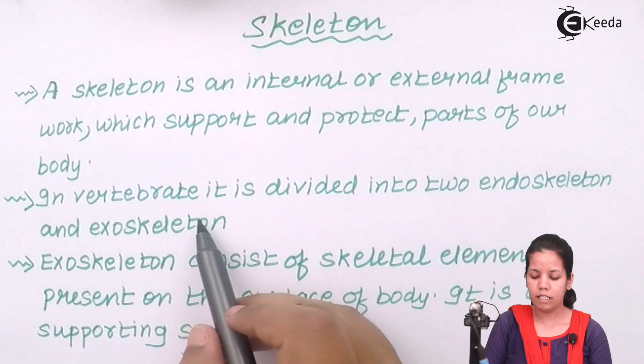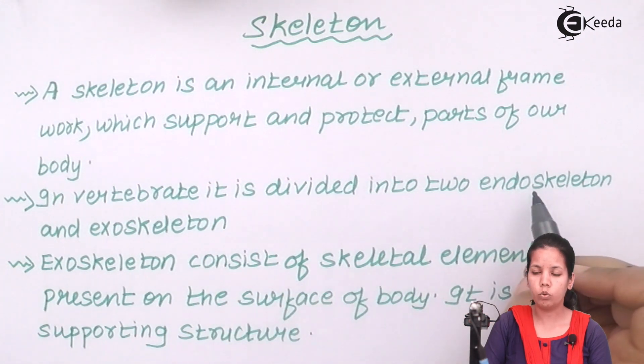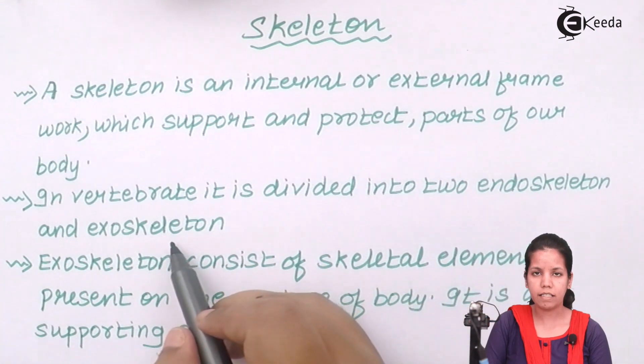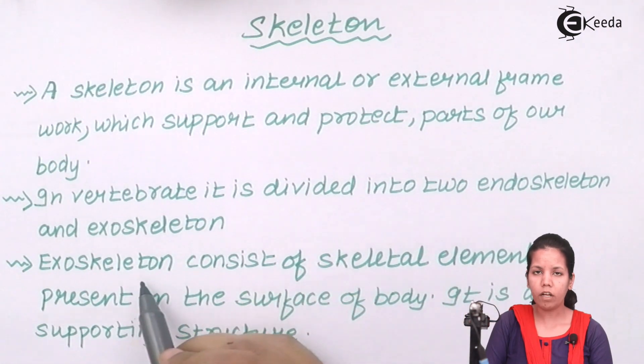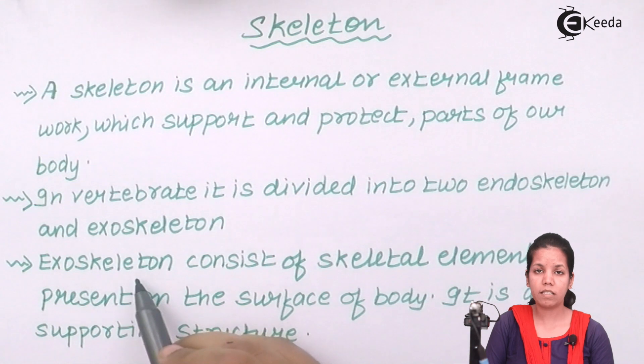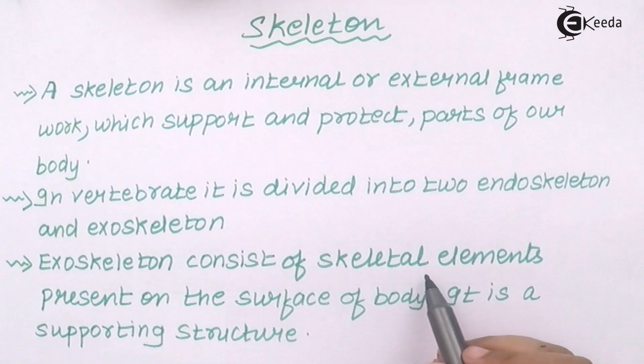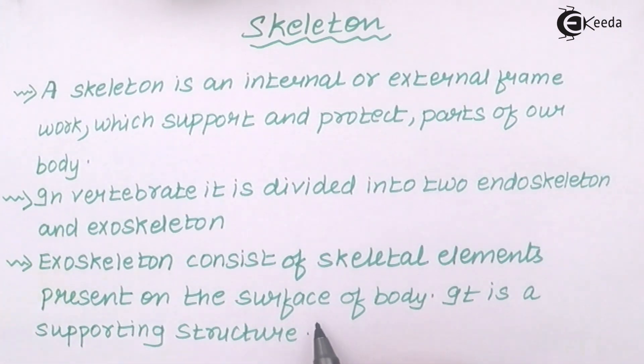Now, in vertebrates, skeleton system is basically divided into two different types. First one is endoskeleton and next is exoskeleton. Now, if I talk about exoskeleton, exo means something that's present outside. So, exoskeleton system basically consists of skeletal elements that are present on the outer surface of your body. It's basically a supporting structure in majority of organisms.